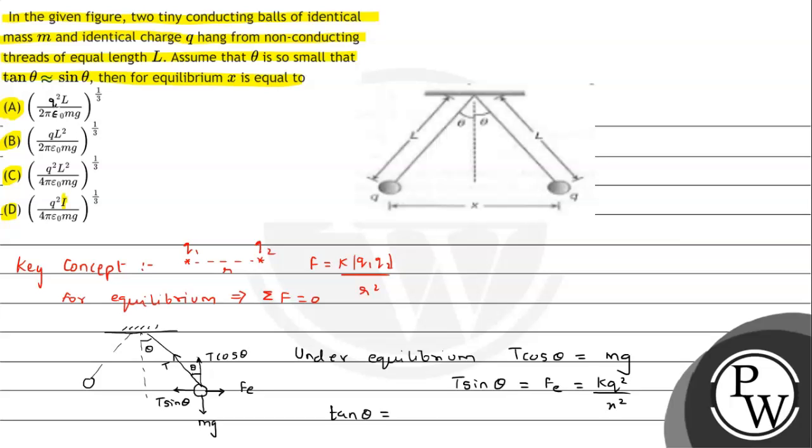If we divide these two expressions, tan theta ki value will be k q² / (mg x²). And since we have been given that tan theta is approximately equals to sin theta, we can say this will also be equals to sin theta.